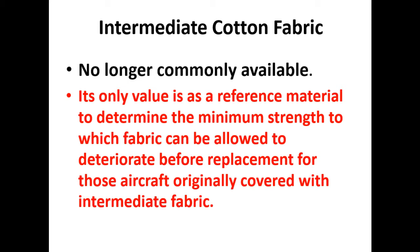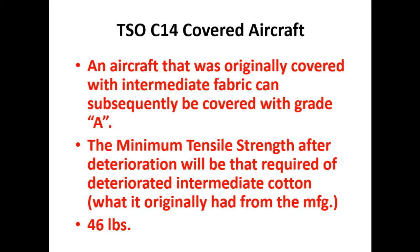The wing loading and the never-exceed speed basically dictate how much strength deterioration we can accept before fabric has to be replaced. If the aircraft originally had intermediate fabric, we can let the Grade A fabric we replace it with deteriorate down to the minimum for intermediate, which is 46 pounds per square foot.